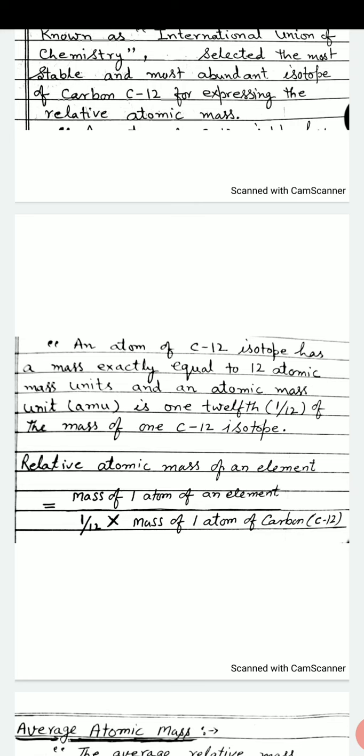Relative atomic mass of an element is equal to mass of one atom of an element divided by 1 twelfth multiplied by mass of one atom of carbon 12.